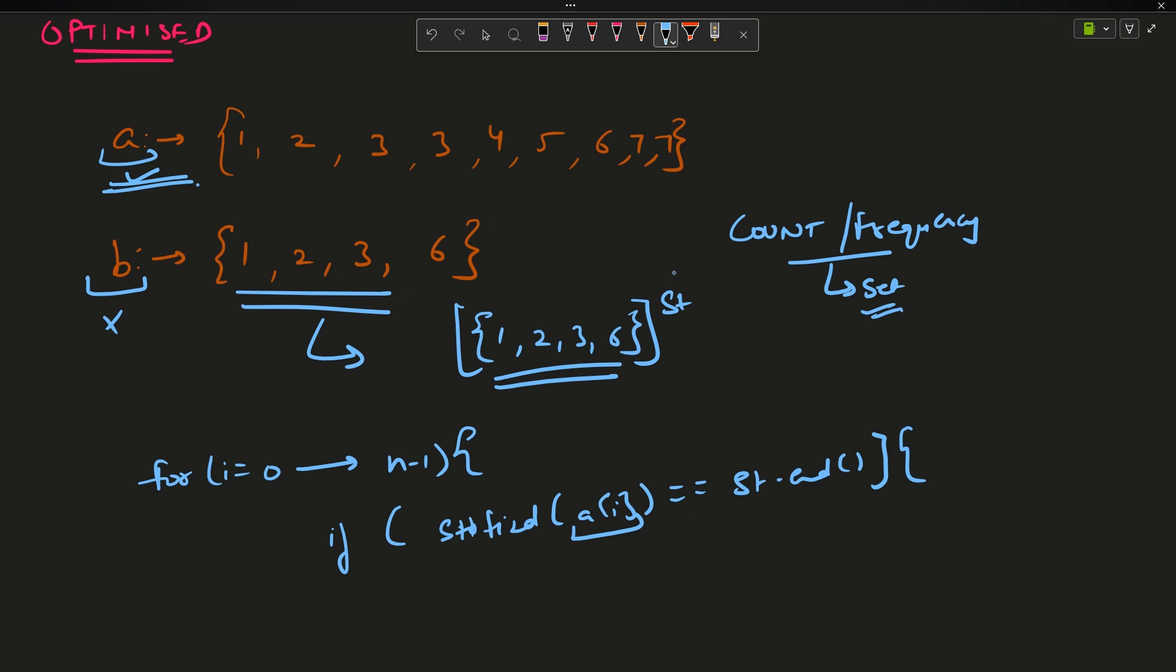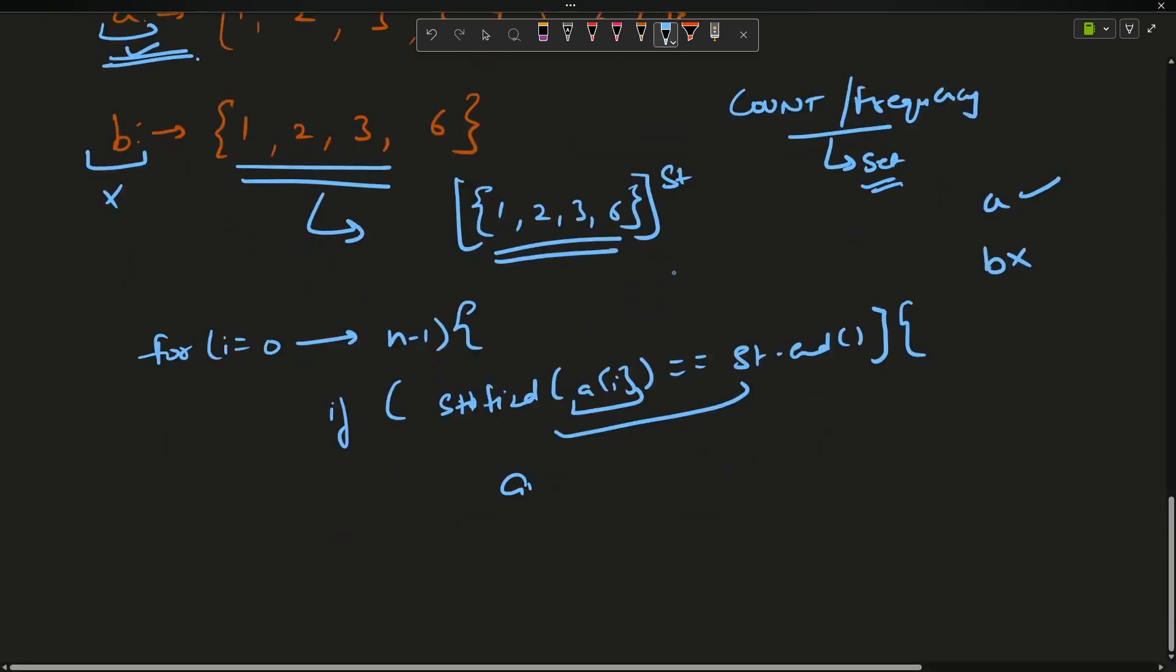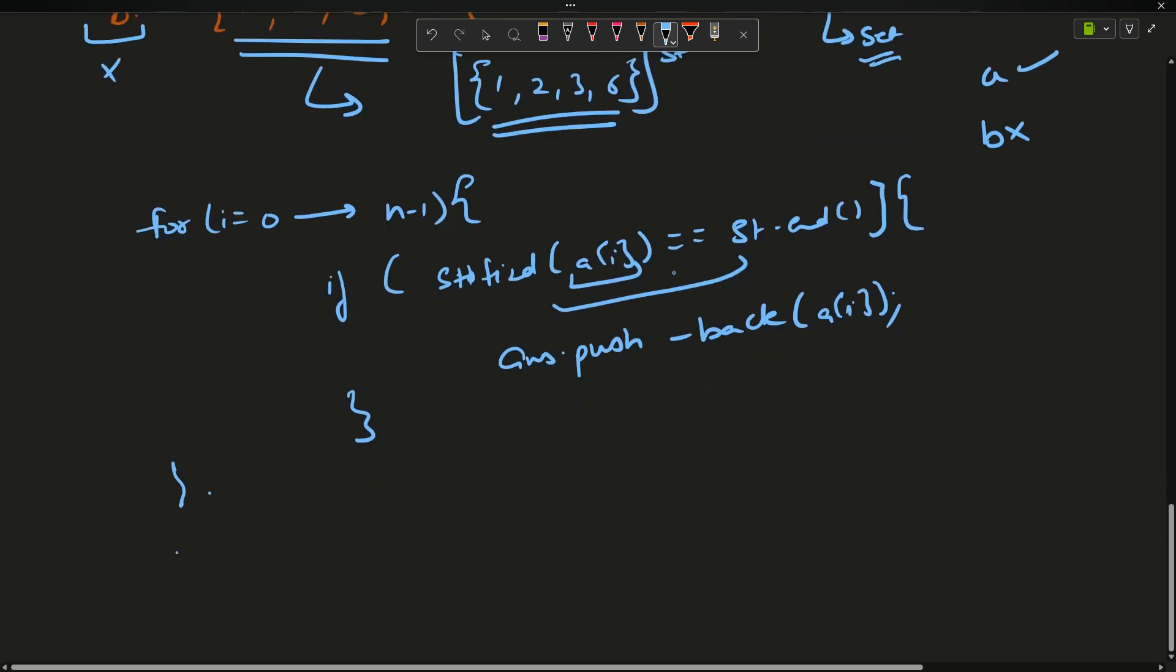St stores the elements of B, and this condition says A[i], that means element is existing in A. If this condition is persisting, that means element is in A and not in B, so in that case I will push that element. Answer.push_back(A[i]) and move forward.